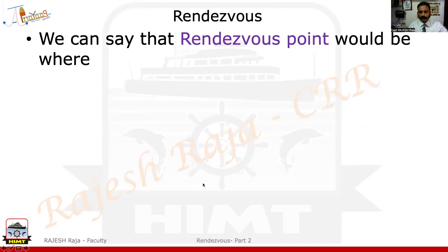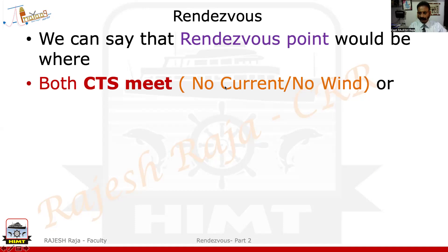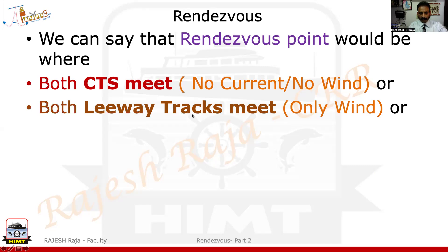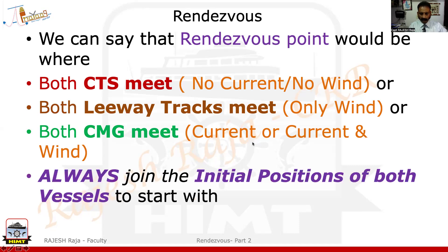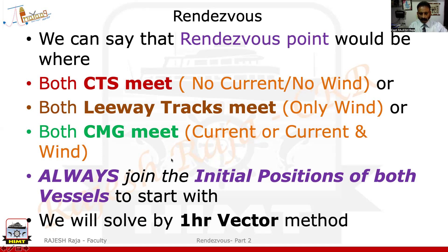A small recap from the concept: your rendezvous point is where both CTS tracks will meet, provided there is no current and no wind. They will be where both leeway tracks meet when only wind is given, or where both CMG tracks meet when current is present. I'm going to use the one-hour vector method to solve this on screen, which is equivalent to solving it on your notebook or answer sheet.